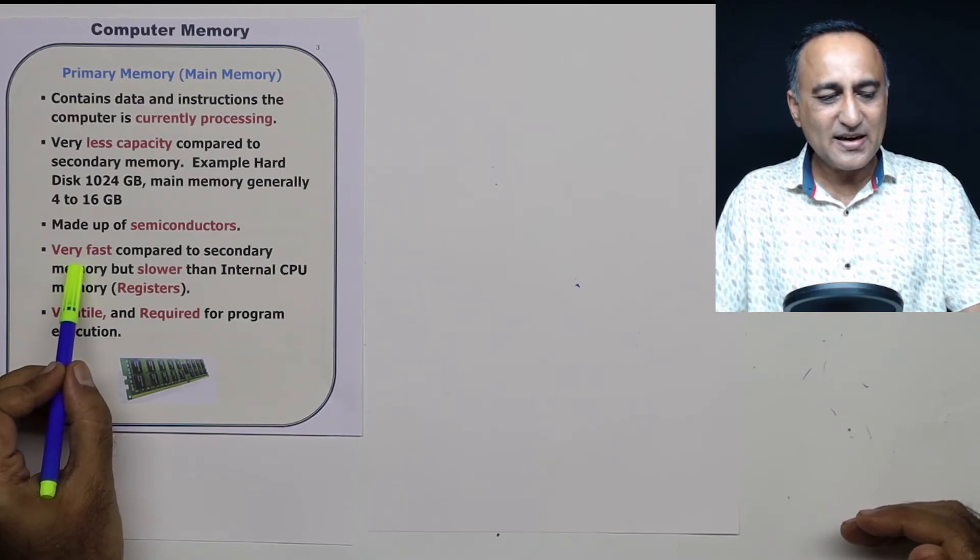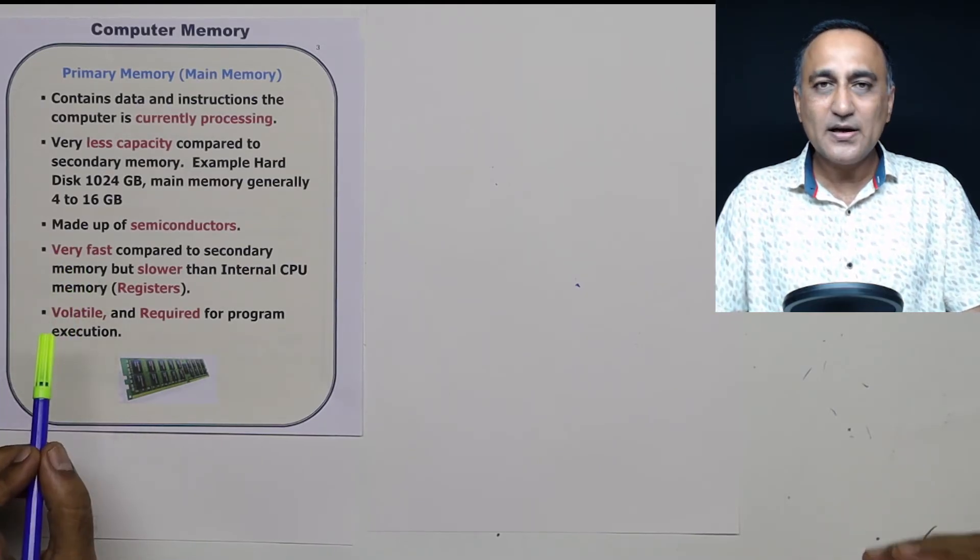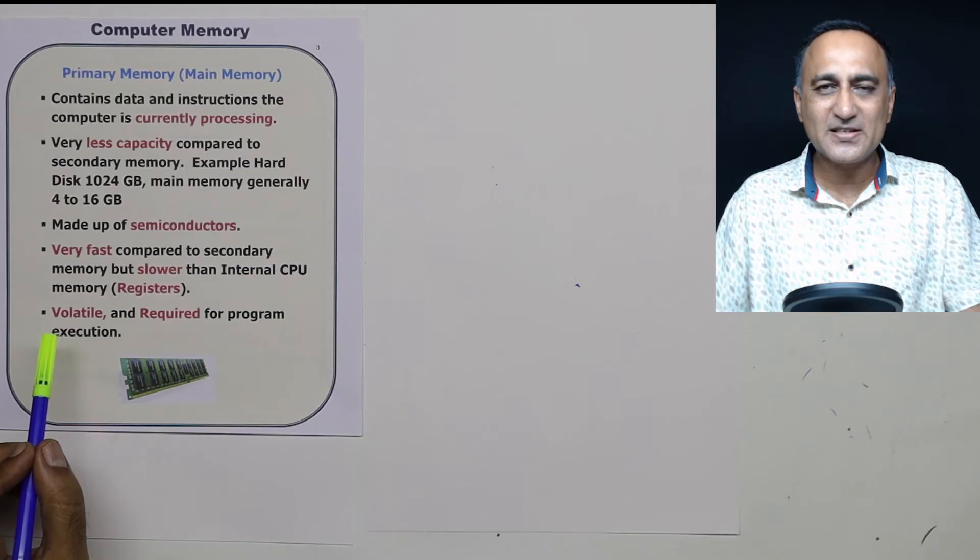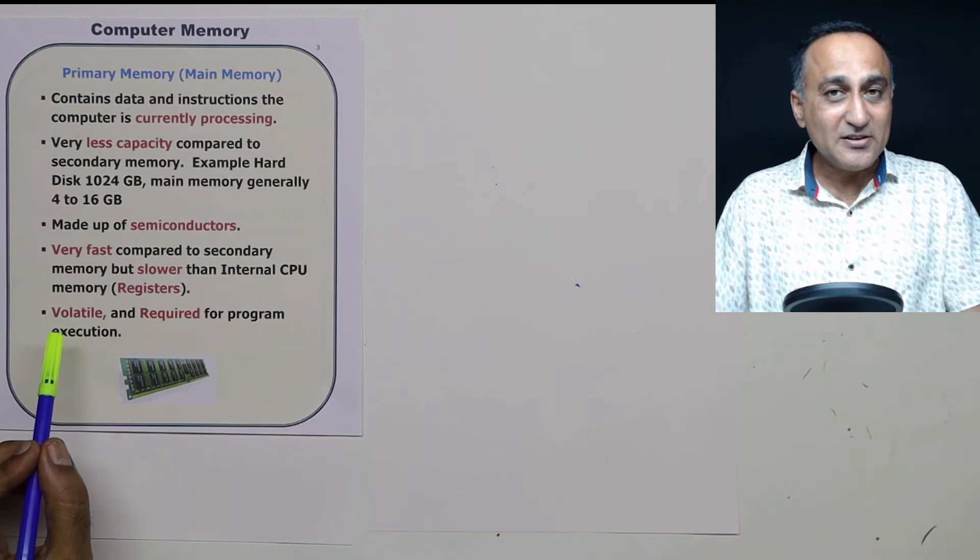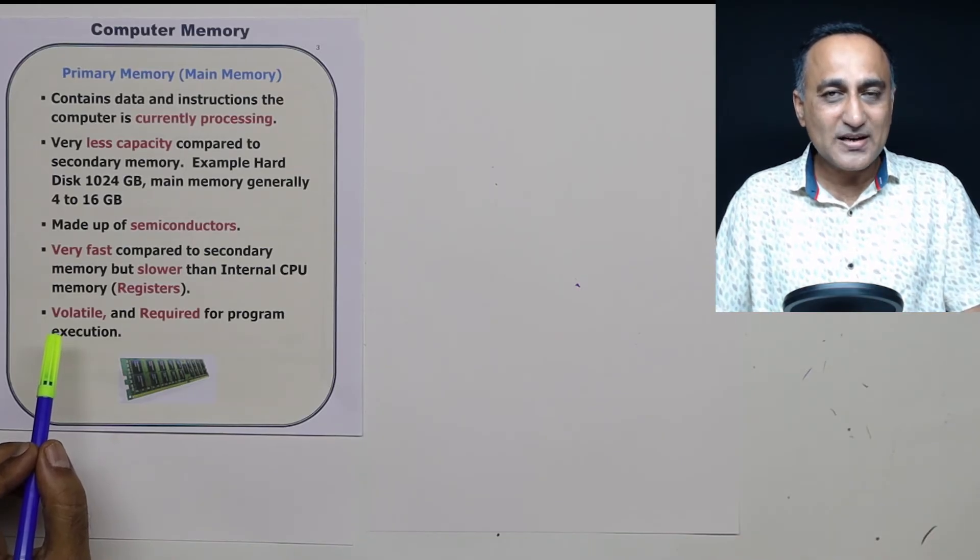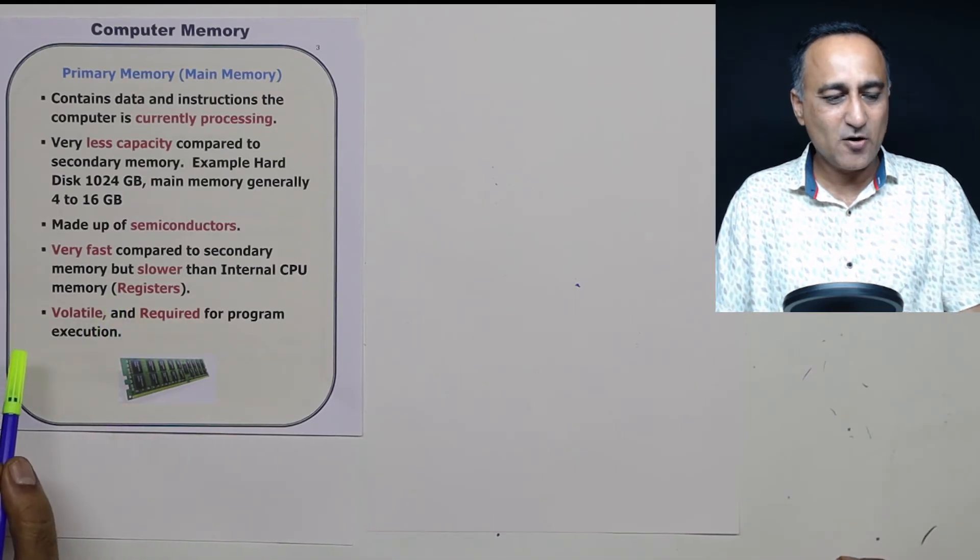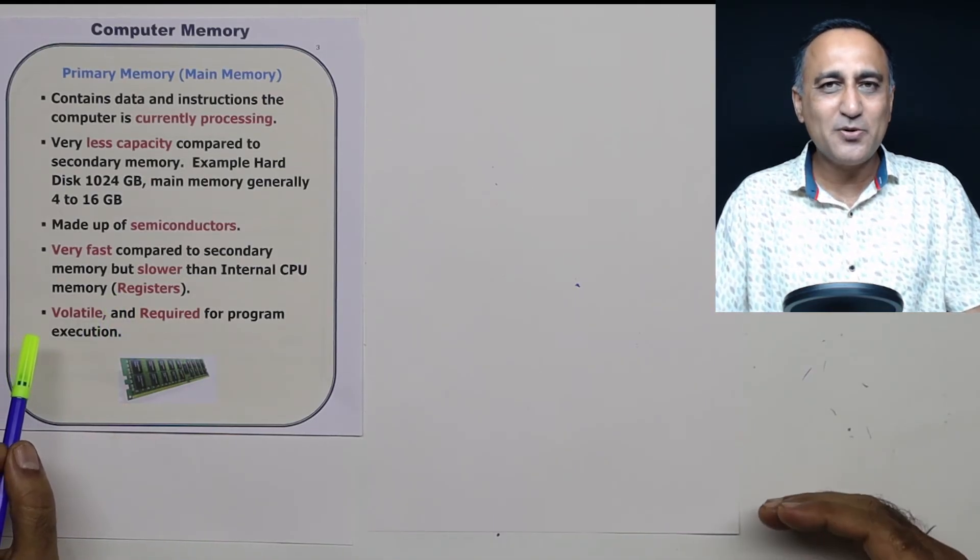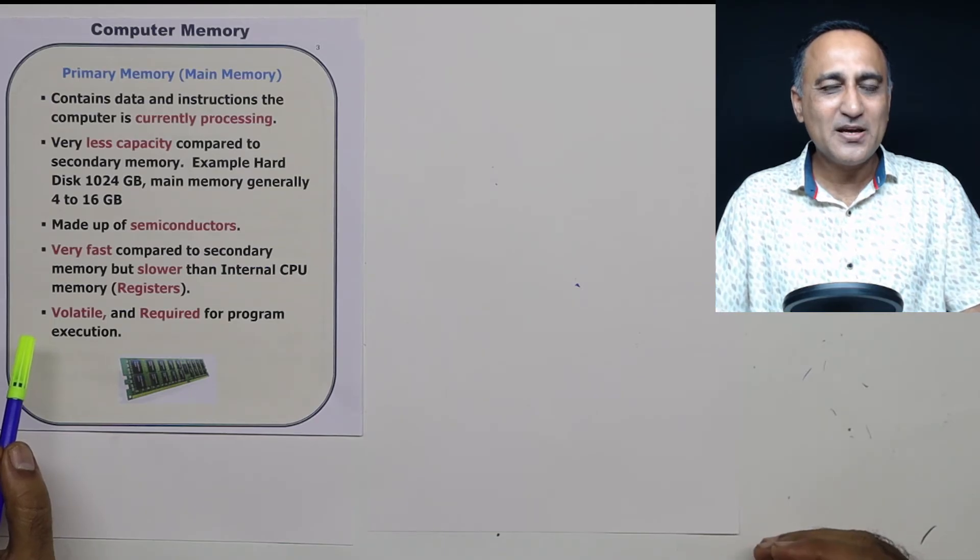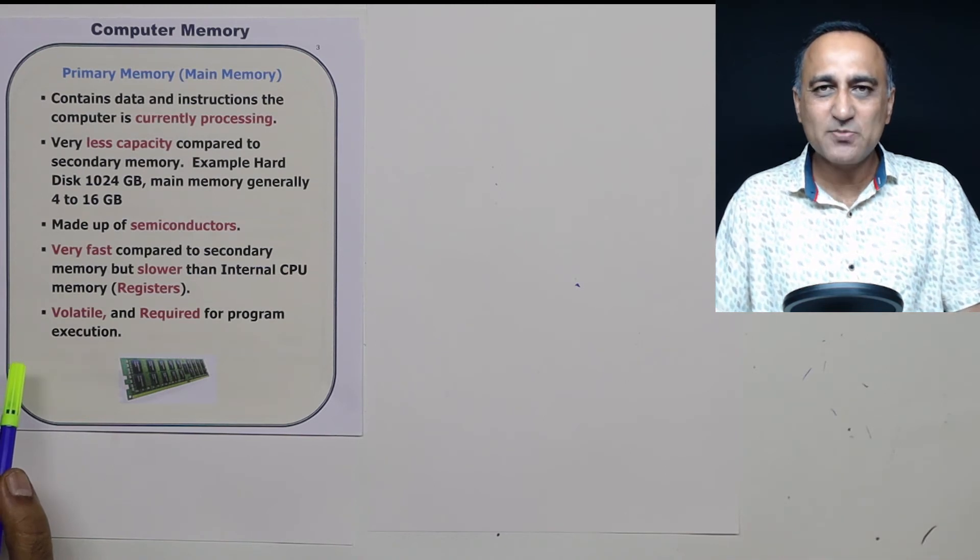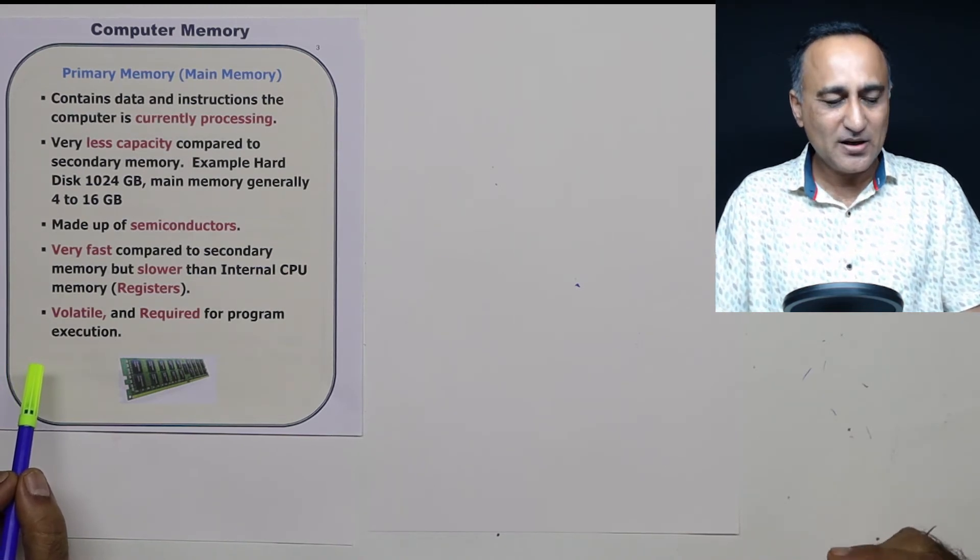It is extremely fast as compared to the secondary memory that is the hard disk or the pen drive. For example, it may be 100 to 200 times faster reading or writing compared to that from the hard disk. But it is not the fastest memory. The CPU or the central processing unit itself has a very small amount of memory called as the register memory. That is the fastest. And then between the main memory and the CPU, there is another super fast memory slower than the registers, but faster than this main memory called as the cache memory that we will be talking about in a subsequent lecture.